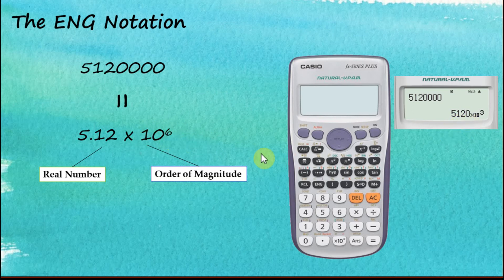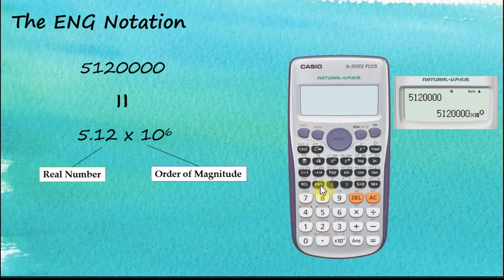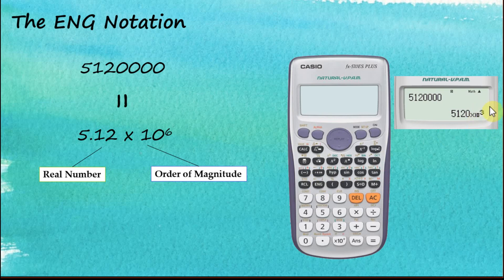When we tap the engineering button again, the real number increases to 5,120, but the orders of magnitude decrease. Each time we tap the engineering button, the real number increases but the orders of magnitude decrease in steps of three: from 6 to 3, from 3 to 0, then to negative 3. To increase the orders of magnitude, use Shift then the engineering button. Pressing Shift+Engineering repeatedly steps the exponent up: from negative 3 up to 0, then 3, then 6, then 9, then 12, and so on.